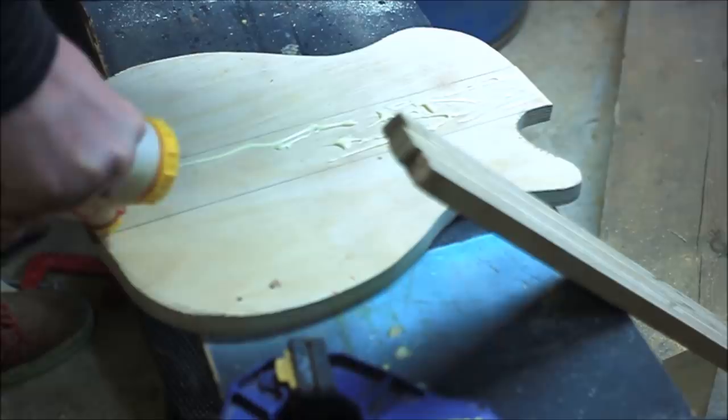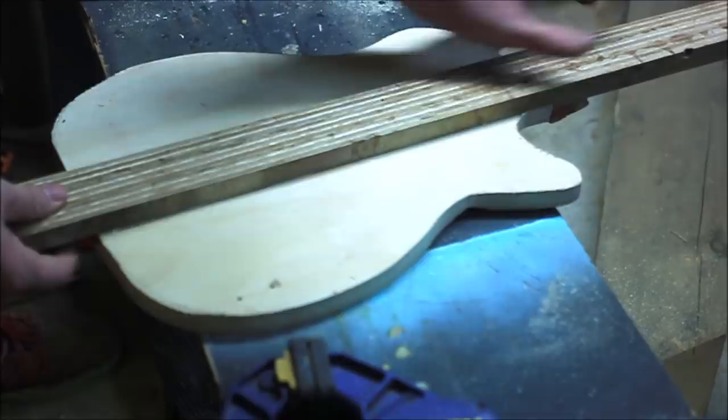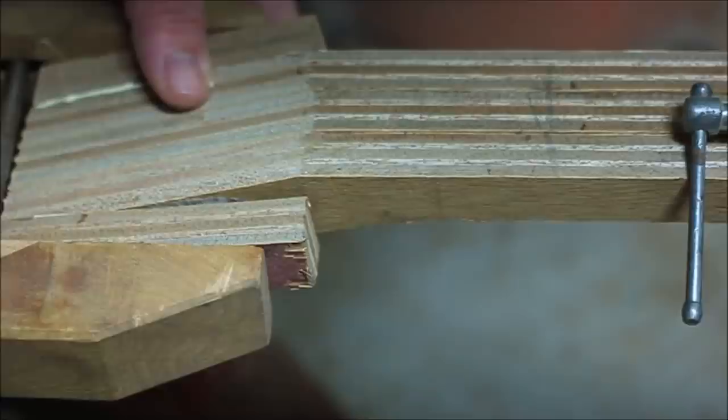So it's time to lay some glue down because I'm going to be laminating the through piece of the neck to the body, which will hopefully add a whole lot of stability to this design. And I want the headstock to flare out of the neck, so I glue a couple extra pieces on that I'm going to shape out later.